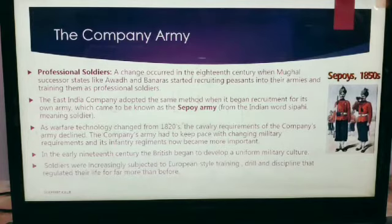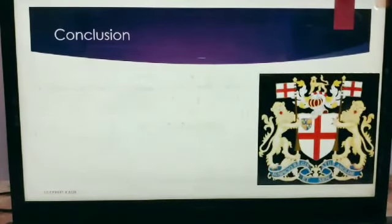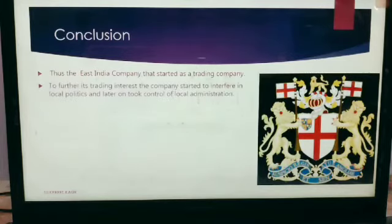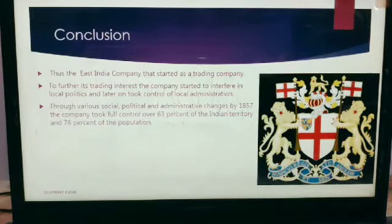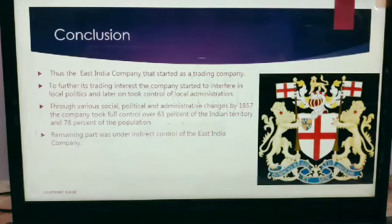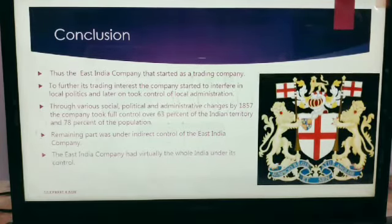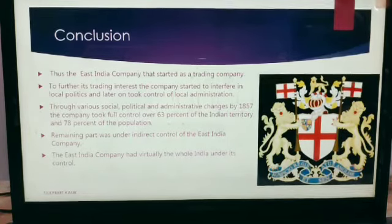Soldiers were increasingly subjected to European-style training, drill, and discipline that regulated their lives far more than before. The conclusion is that the East India Company, which started as a trading company, began to interfere in local politics to further its trading interests, and later took control of local administration. Through various social, political, and administrative changes, by 1857 the company took full control over 63 percent of Indian territory and 78 percent of the population, with the remaining part under its indirect control.